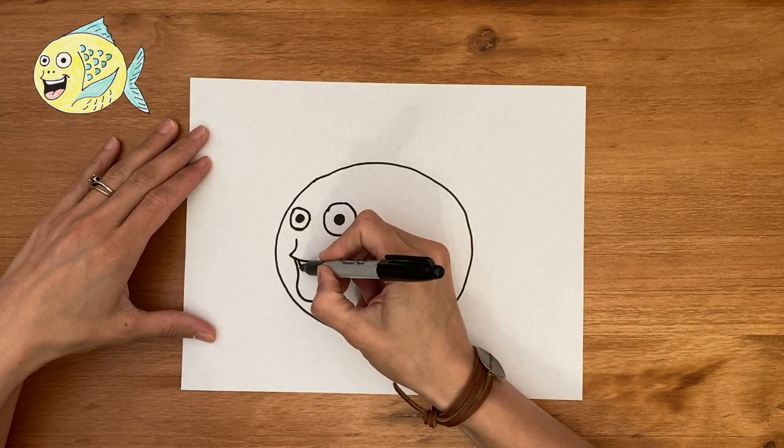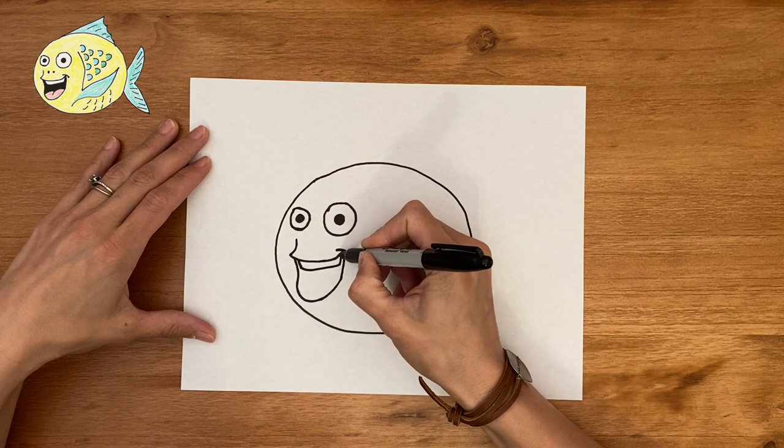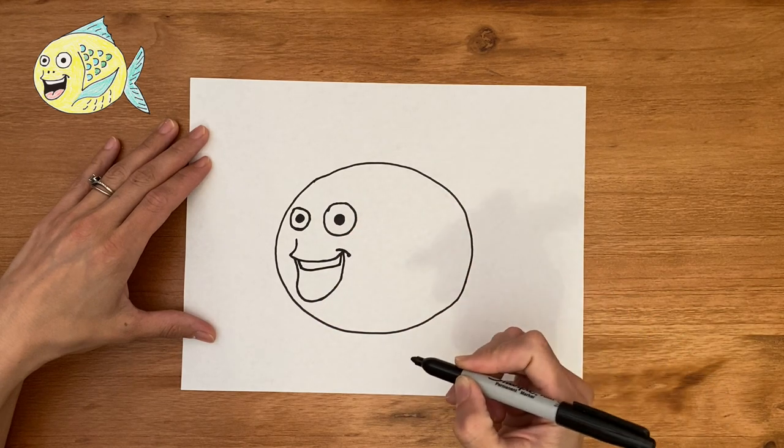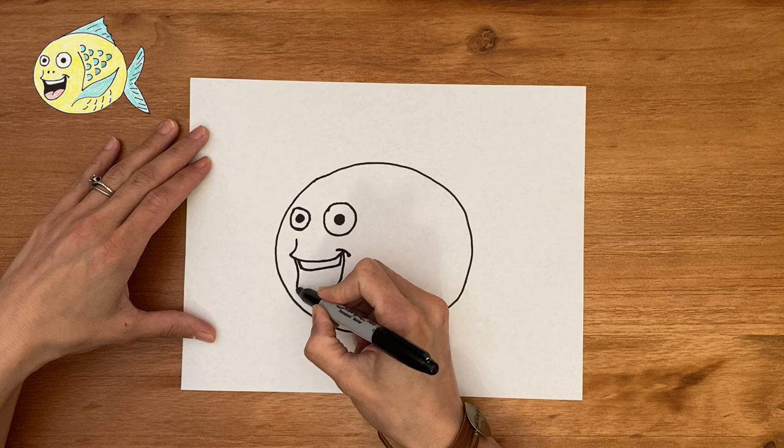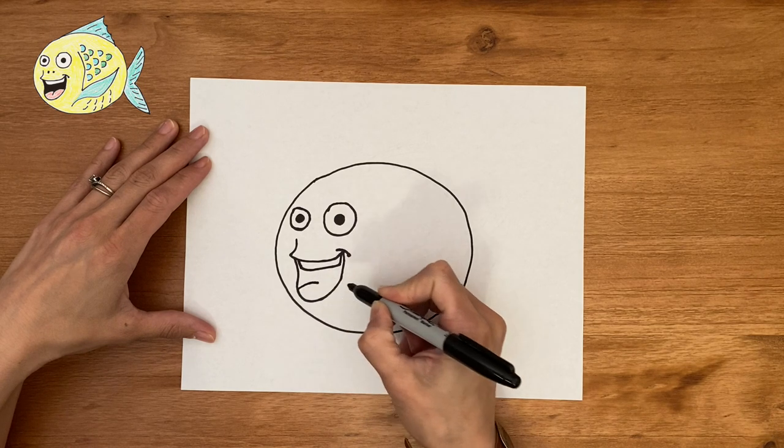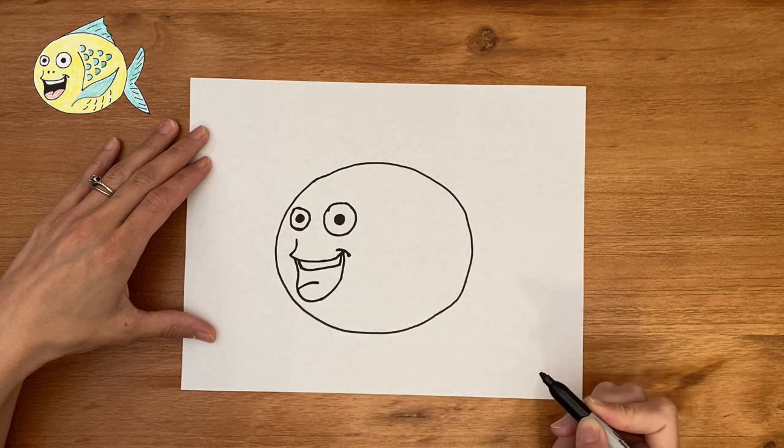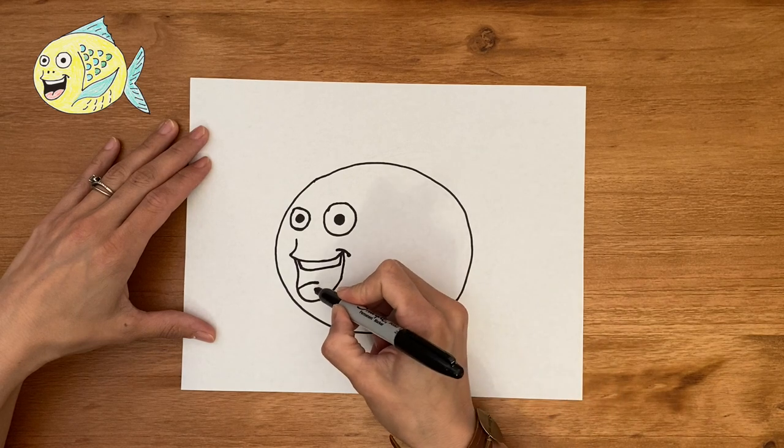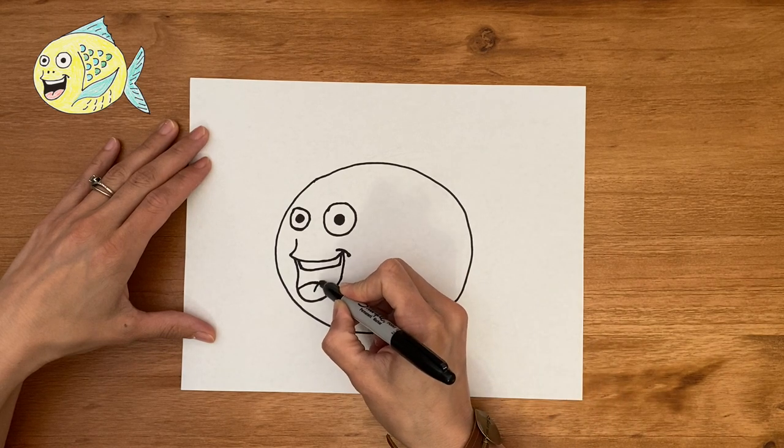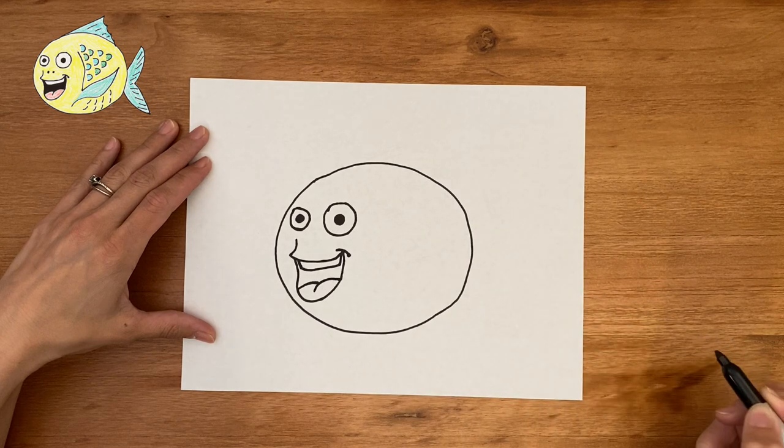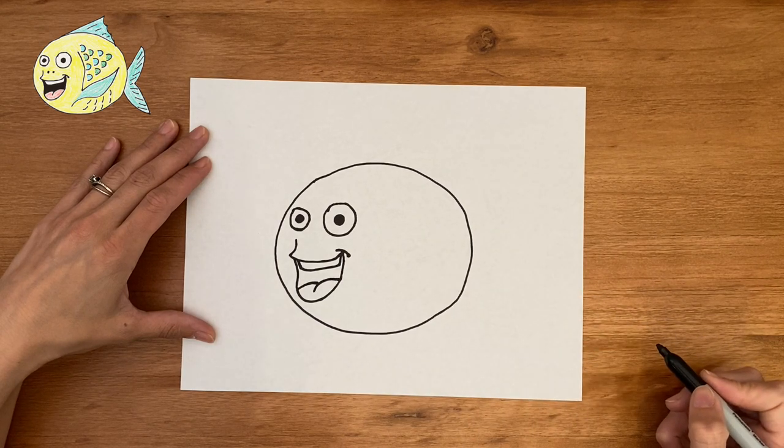And now let's make some teeth. Just come down at the top and make one little rectangle for the teeth and the tongue, two curves, almost like mountains. So one line there and then make another one right next to it. There's the tongue. It's kind of like two mounds.